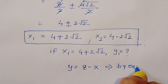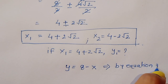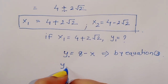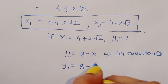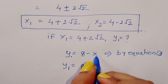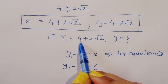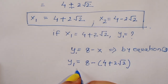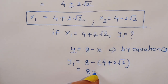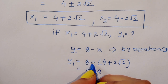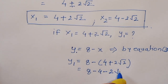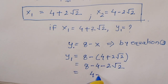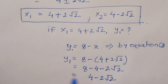By equation 3: y1 is equal to 8 minus x1, which is 8 minus (4 plus 2 root 2). This equals 8 minus 4 minus 2 root 2, so y1 is equal to 4 minus 2 root 2.